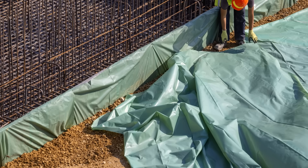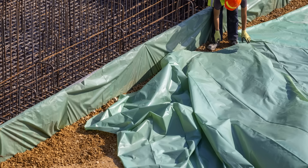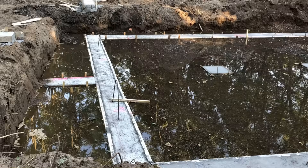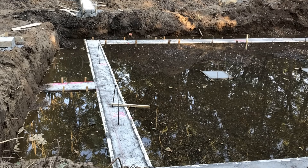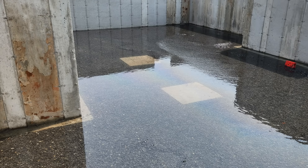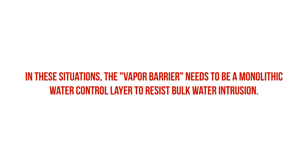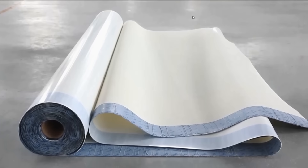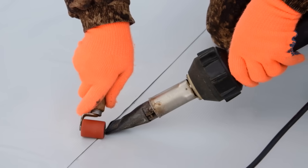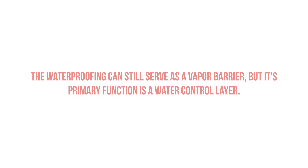Now if you're using a vapor barrier to waterproof the underside of the slab, then the holes actually matter. Let's say you've decided to build a slab in a marshy area, or you're constructing a basement in a location with a high water table — then we need to stop thinking of the vapor barrier as just a vapor barrier, but as a monolithic water control layer. This means we aren't using off-the-shelf polyethylene, but rather a pre-applied waterproofing membrane intended for submerged conditions that can resist enormous amounts of hydrostatic pressure without seam failures. It can serve as a vapor barrier, but its primary function should be a water control layer.